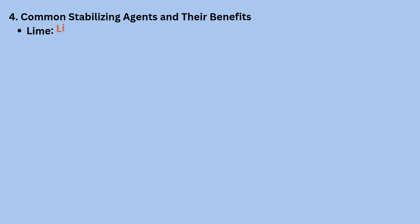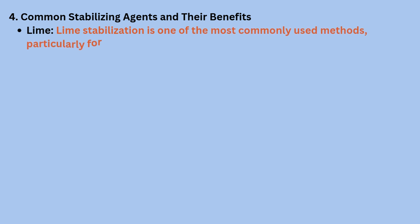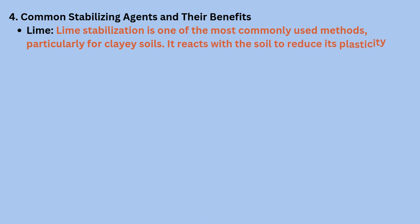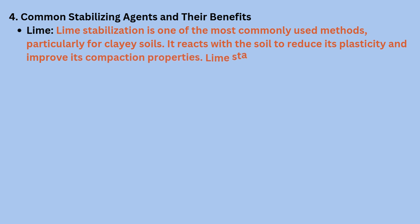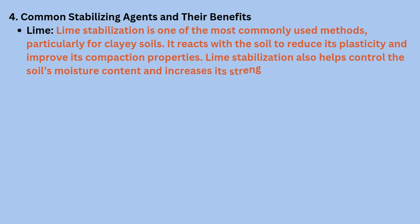Common stabilizing agents and their benefits. Lime stabilization is one of the most commonly used methods, particularly for clay soils. It reacts with the soil to reduce its plasticity and improve its compaction properties. Lime stabilization also helps control the soil's moisture content and increases its strength.